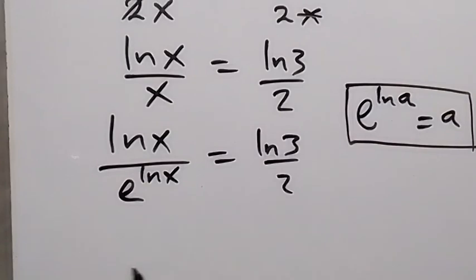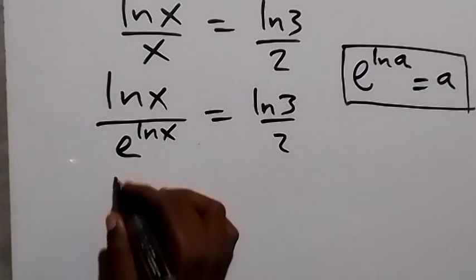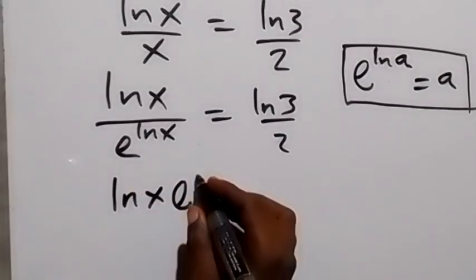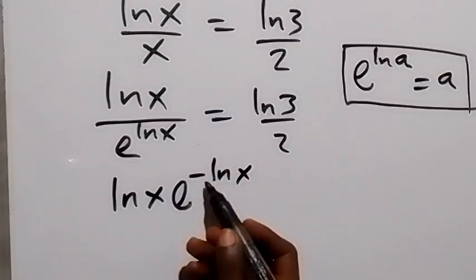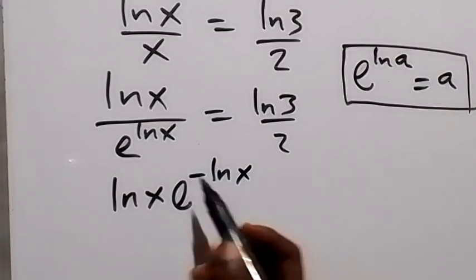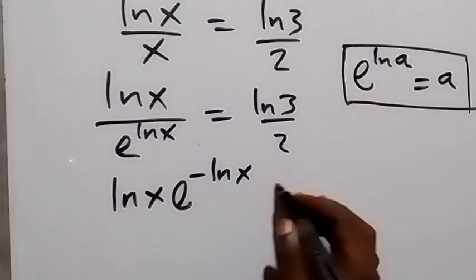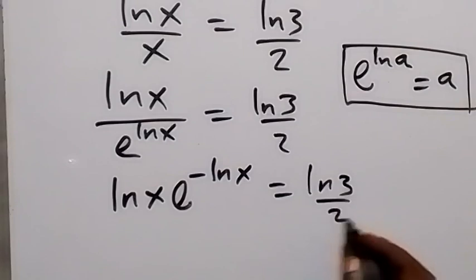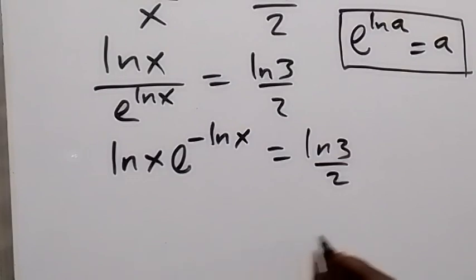Since e^(ln x) in the denominator equals x, we can write this as ln(x) times e raised to the power of negative ln(x), because the minus sign represents the reciprocal — that is, 1 over e^(ln x). This equals ln(3)/2.